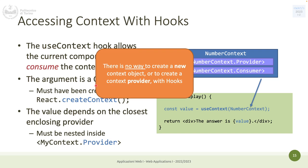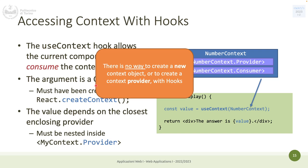The hook way is the modern way. Context started with the component-based approach, and when React developers added hooks, they decided to add a hook to consume the context but not yet to create or provide a value to an existing context. So hooks apply only for consumers. Everything else is done the component way.